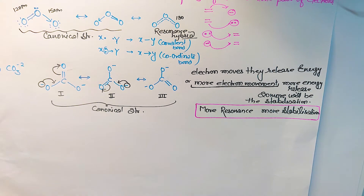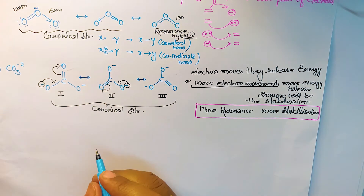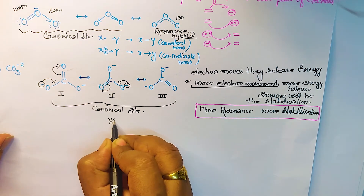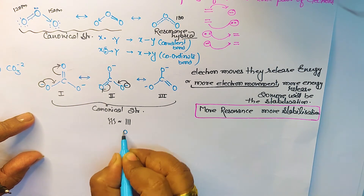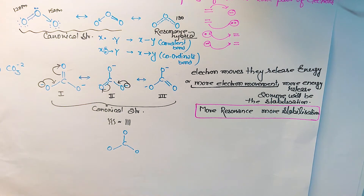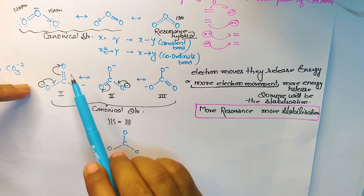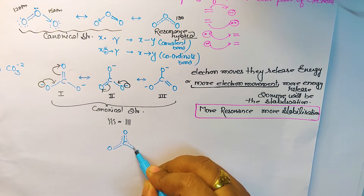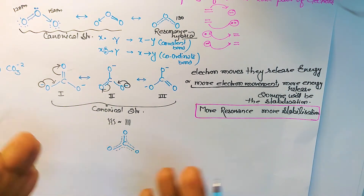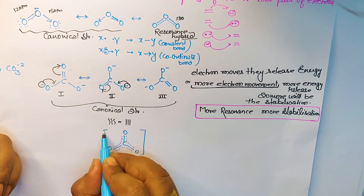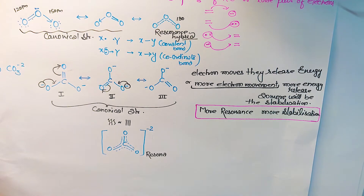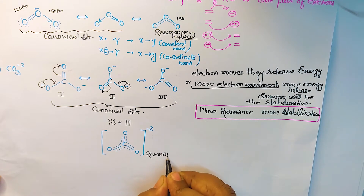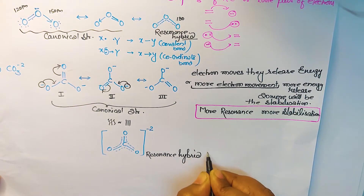The actual structure is the resonance hybrid. To draw it: the single bonds remain fixed, but the double bond delocalizes over all three C–O bonds, shown as dotted lines. The negative charge is distributed overall as a 2/3 charge on each oxygen. The resonance hybrid is more stable than any individual canonical structure.